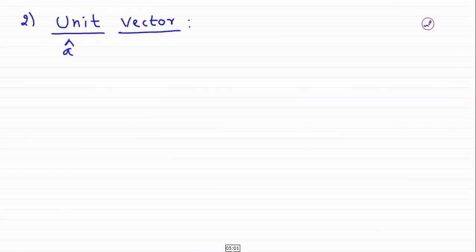The next important concept is the unit vector, represented by a-cap. As the name suggests, this is a vector whose magnitude is 1. It is given by the vector divided by its own magnitude — the division of the vector by its magnitude gives you the unit vector with magnitude 1.